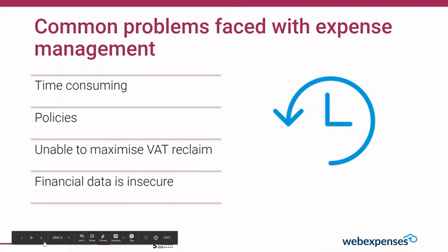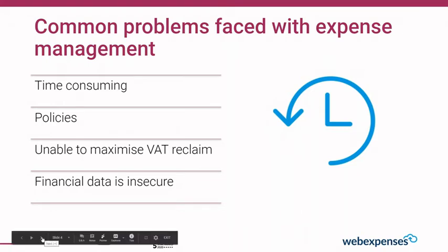The third problem is financial data being insecure. With receipts stored on people's desks or in their cars, sensitive information being lost, duplicated, or incorrect is common with paper processes or multiple systems. Our central, secure cloud-based solution allows all receipts to be stored in the system — claimants can take a picture, store it in the repository, and choose when to push it into a claim. Admins can hold claims and, for audit purposes, see exactly which receipts are attached.